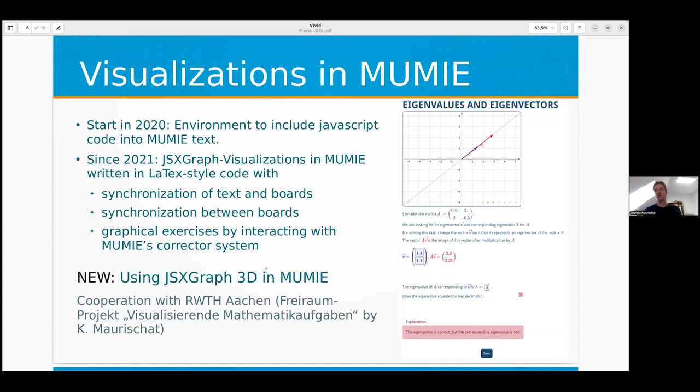With visualizations in Mumia, we started in 2020 because we had old visualizations which became very slow. We saw that JSXGraph is really great, so we started to include this JavaScript code in Mumia text so that you can put the examples available on the web page into Mumia. Then we developed more so that the visualizations interact with the text, synchronizing the text and the boards, and several boards can interact easily between each other.